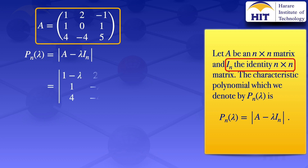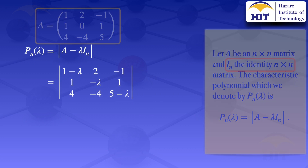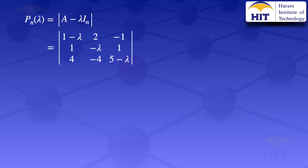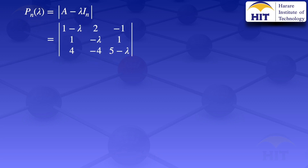The result will be the determinant of the matrix with entries: 1 minus lambda, 2, minus 1 in the first row; 1, minus lambda, 1 in the second row; 4, minus 4, 5 minus lambda in the third row. What we now have to do is find the determinant of that 3 by 3 matrix.